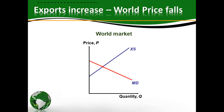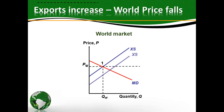Let's see what happens in the world market. Suppose this was our demand and supply in the world market and the equilibrium price would be PW, the world price. As soon as a large country is given an export subsidy, there is an increase in exports to the rest of the world, and it's going to have an effect on prices because the exporting country is a large country with a large share of the export market. So there is an increase in export supply, which pushes down the world price to PW*. The new equilibrium point is at 2. So an export subsidy by a large country really pushes down the world price.